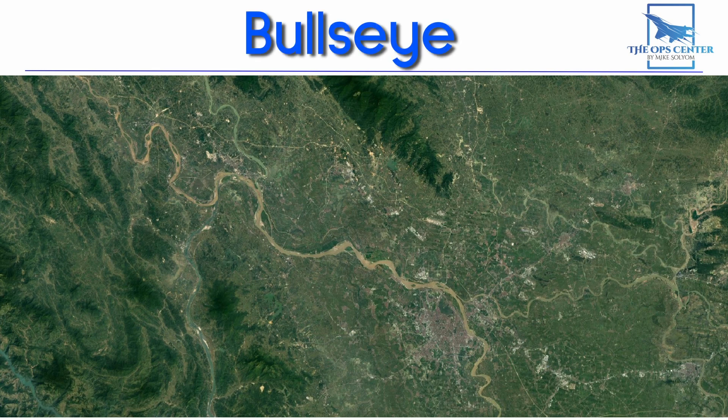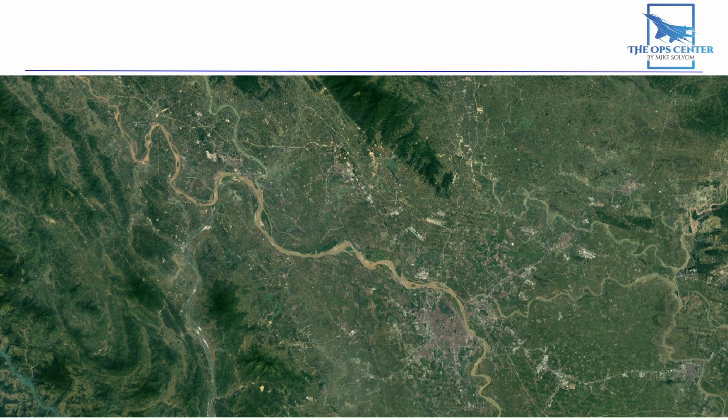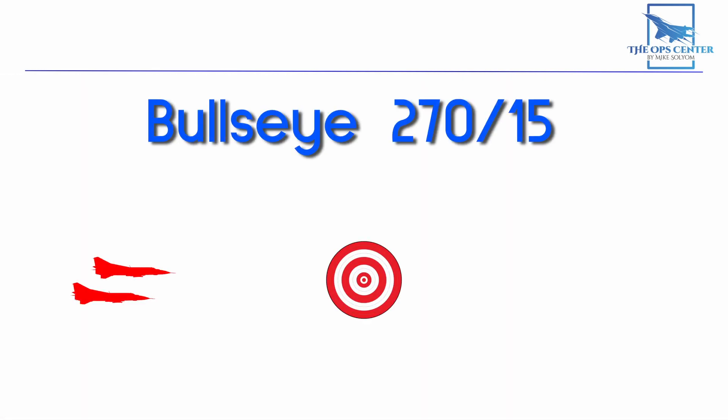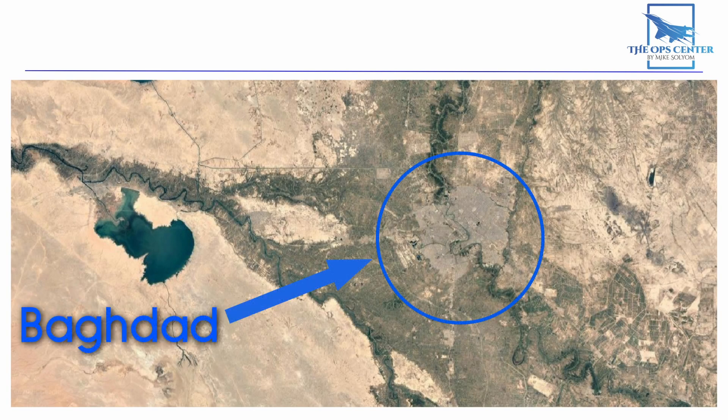When enemy fighters or air defenses were spotted, they could be quickly located in reference to the city. A large city on a river is easily identifiable, so when a bomber crew announced enemy interceptors were located on a bearing of 270, 15 miles from bullseye, it was very easy for every friendly fighter in the area to converge on that location — they could just visually locate Hanoi and look to the west. All this was done with a single radio call from the bomber; each individual fighter did not need its own personalized talk-on. This was such an effective tactic that it was reused in Desert Storm, where Baghdad became bullseye, and now it's codified in doctrine for all US services.